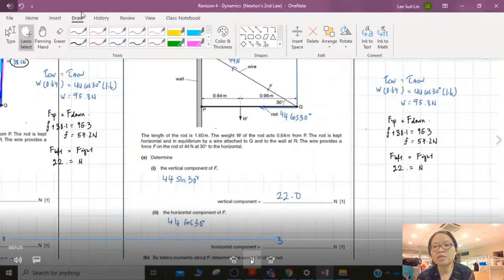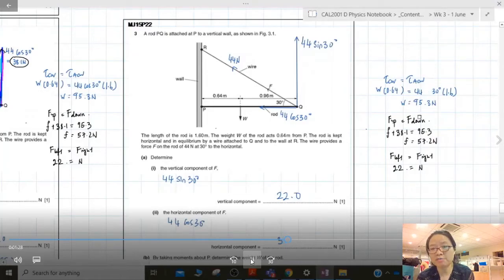Okay, so from here you can see if I want to find the weight of the bar, I need to change my 44 cos 30 to 44 sine 30, and that will give me I think 55 newton.